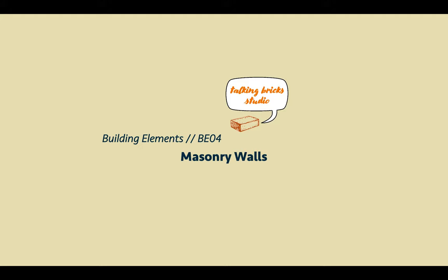Welcome to your building elements module on masonry walls. This module will introduce you to basic masonry construction used in residential buildings. It starts with the fundamental issues of damp proofing of masonry walls, and then looks at brick walls with various coverings and openings including details of jams and lintels for fenestration. It will finally discuss details for stone walling.